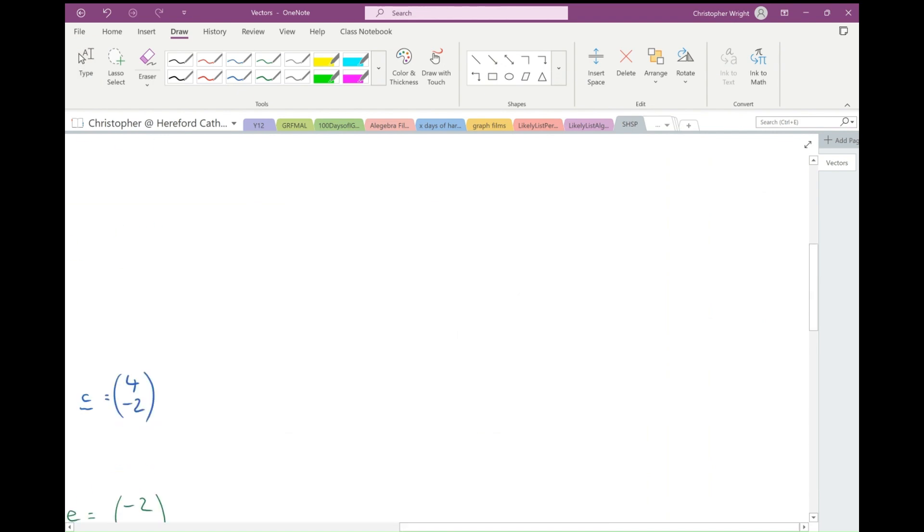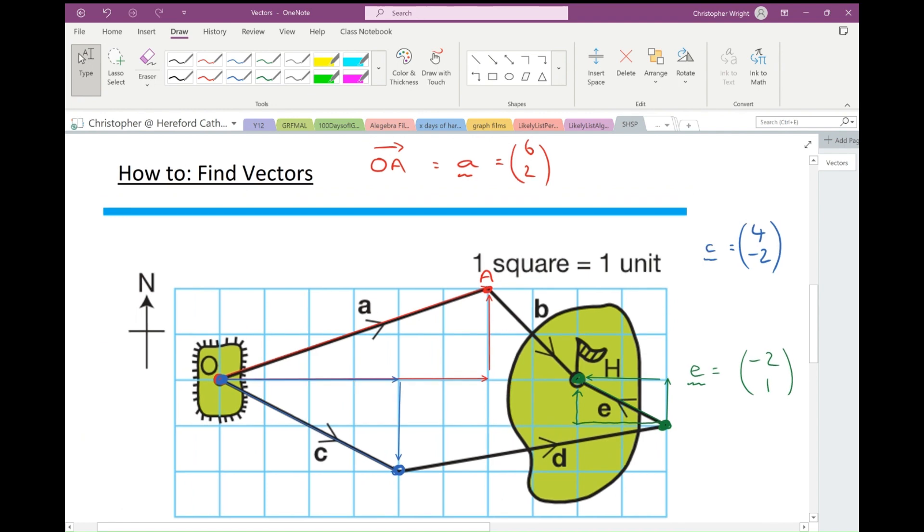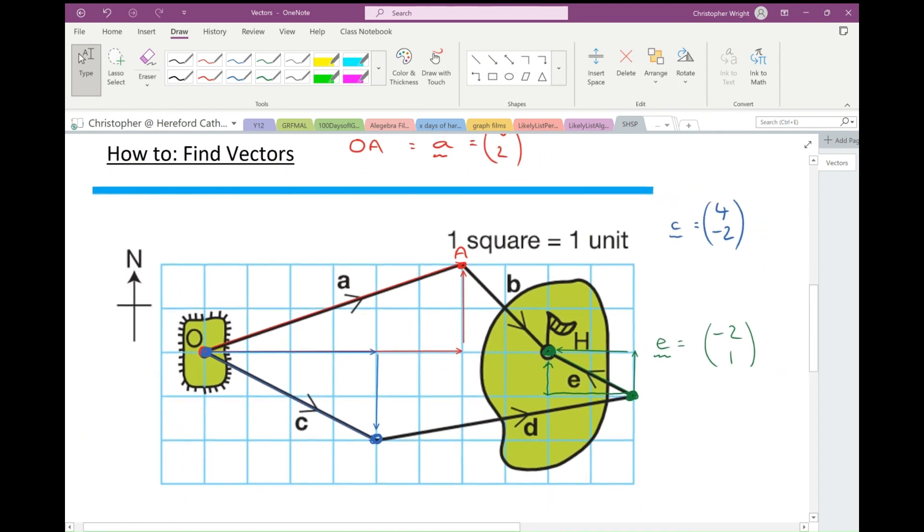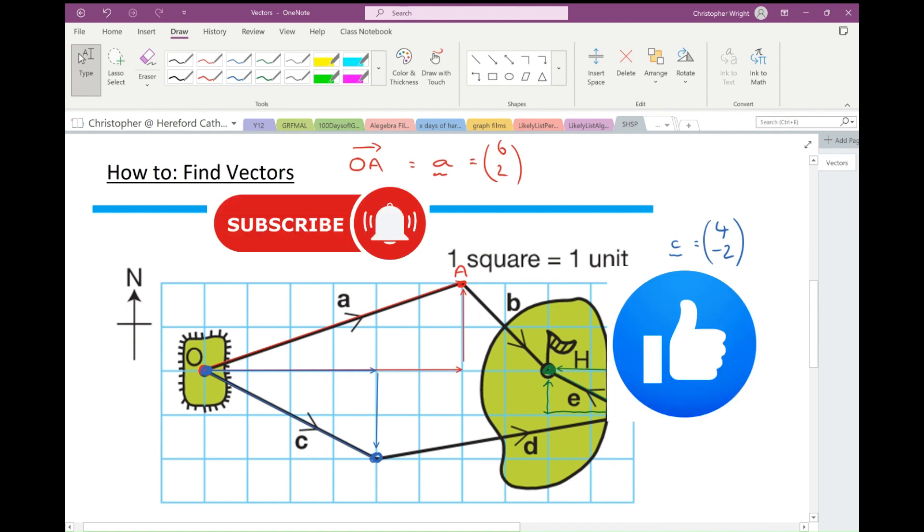That's a quick film on how to find vectors. Be careful of your signs and make sure you do the horizontal first. If you found this film useful, please hit like and perhaps consider subscribing to the channel.